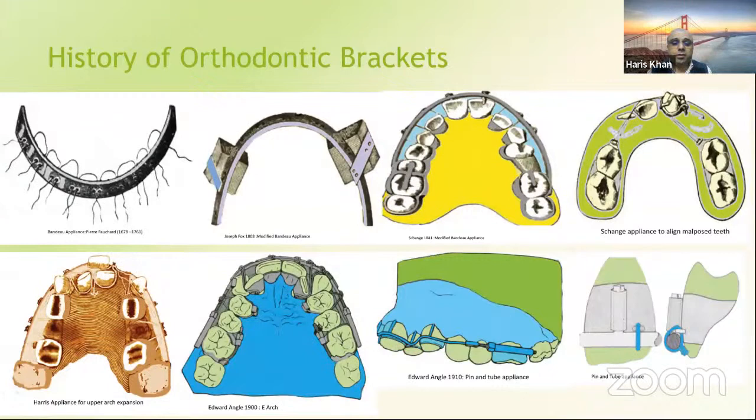There is a story that Angle extracted premolar teeth of his wife and was never able to close the spaces, so he changed his philosophy from extraction to non-extraction. All his appliances were based on non-extraction. If you see these appliances, there are screws, there are rods, and the concept is to align the teeth by expanding the arches.